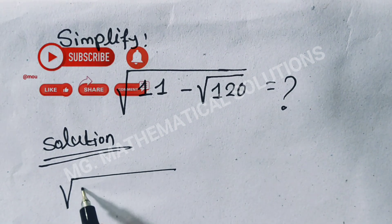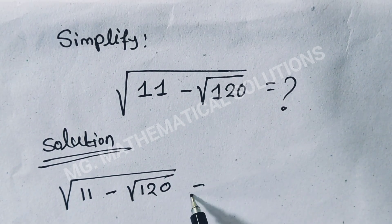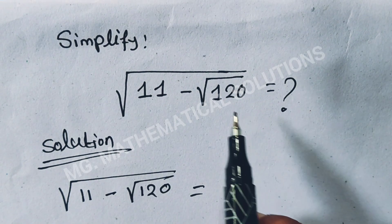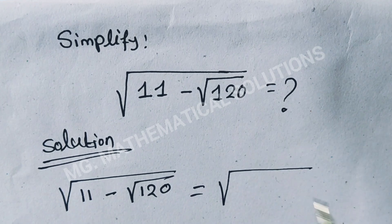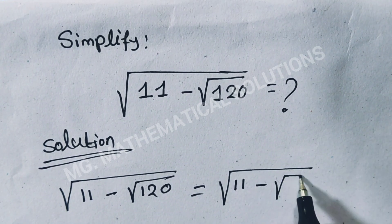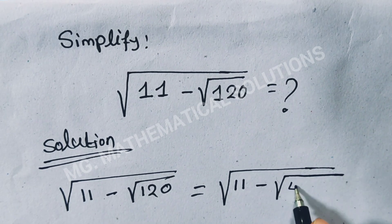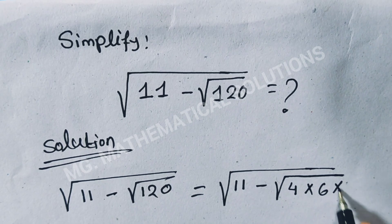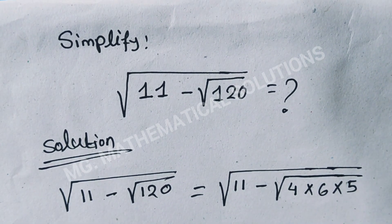11 minus root under 120 equals — first we will factorize 120. So root under 11 minus root under 4 times 6 times 5 equals...